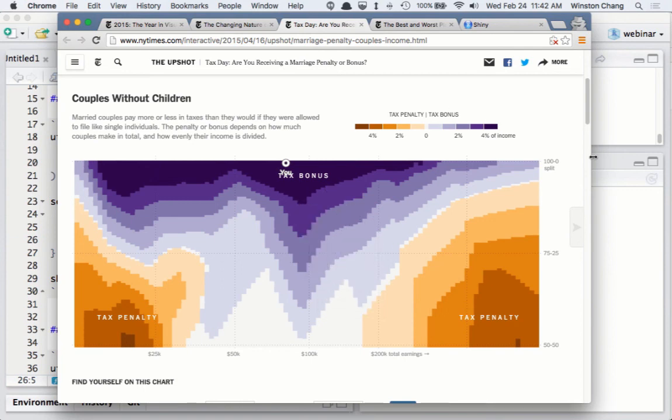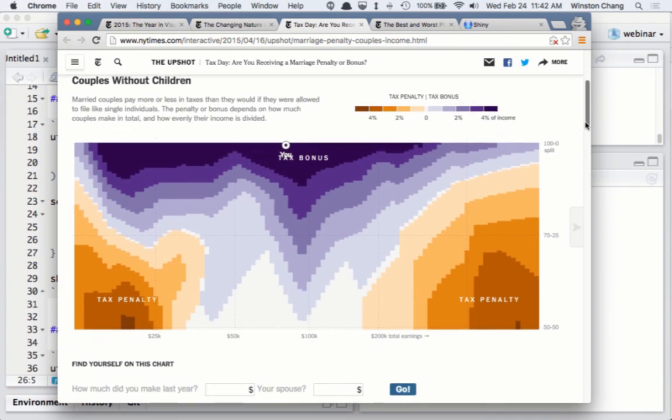Like on this, on the x-axis here it's the total income and the y-axis is the percentage split that's earned by each partner. Okay, so that's one.